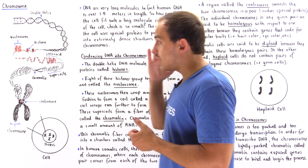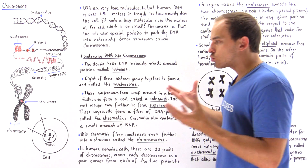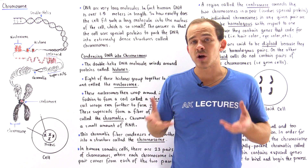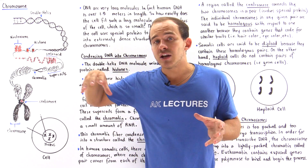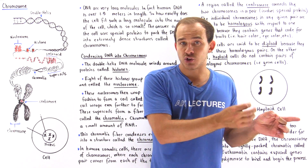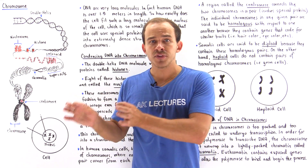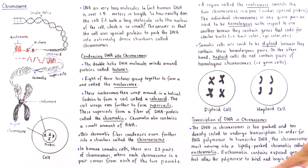The last concept I'd like to discuss briefly is how exactly do we use the chromosomes in the process of transcription. Transcription is the process by which we take our DNA molecule and transcribe it into the mRNA molecule, and then those RNA molecules are used to synthesize the proteins that the genes on the DNA code for. The DNA in chromosomes is too packed and too densely coiled to actually undergo the process of transcription.